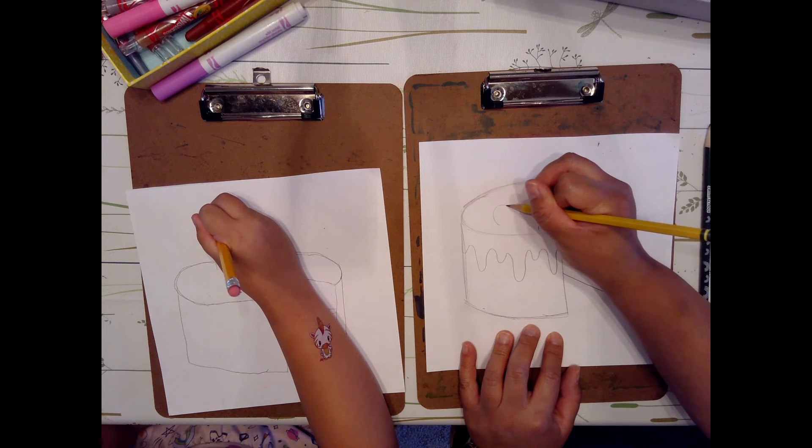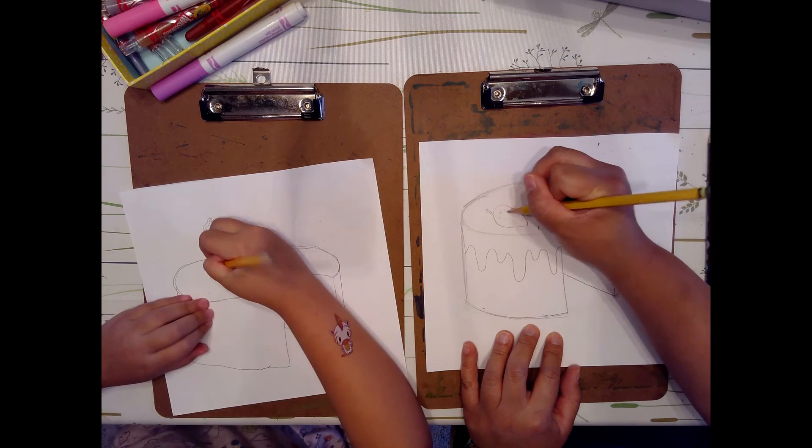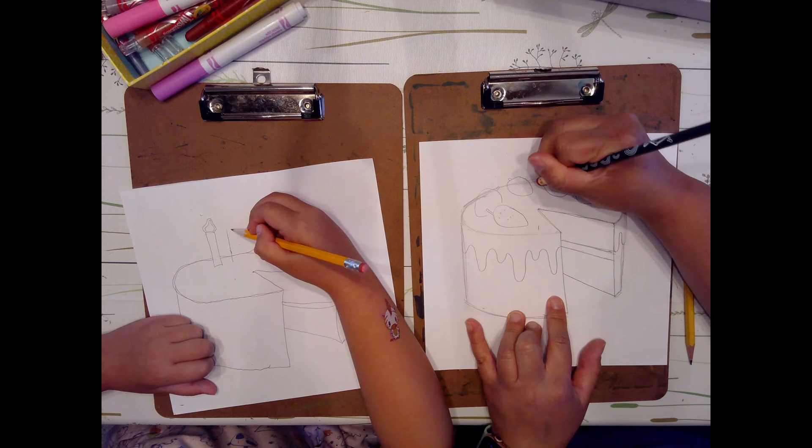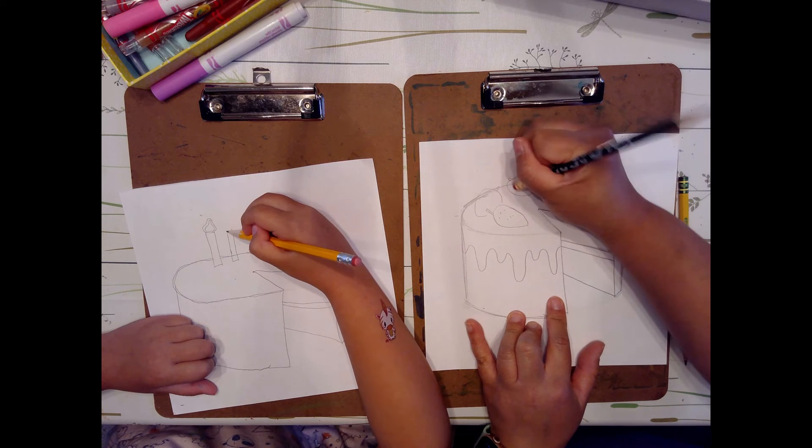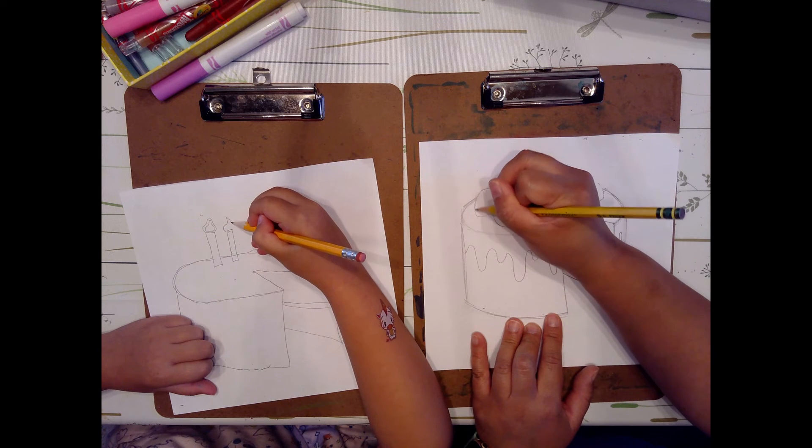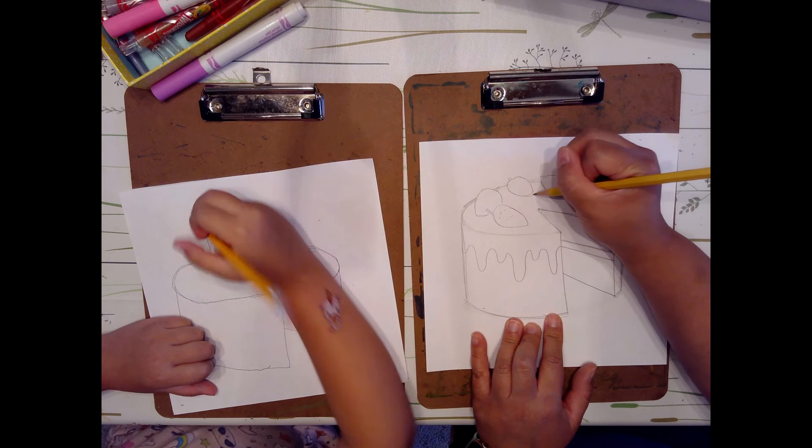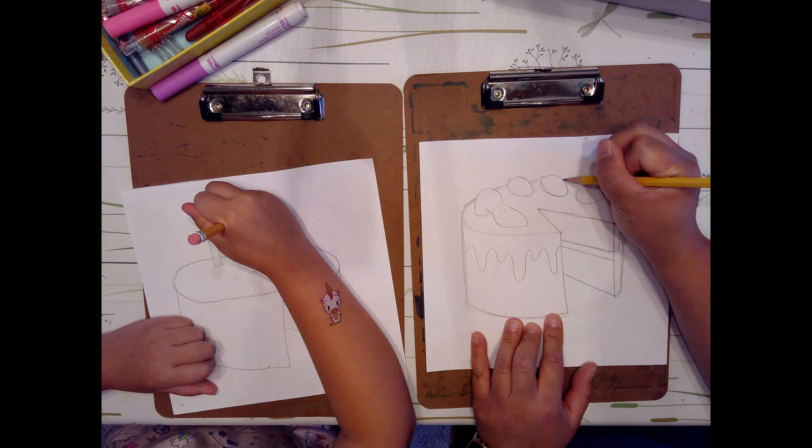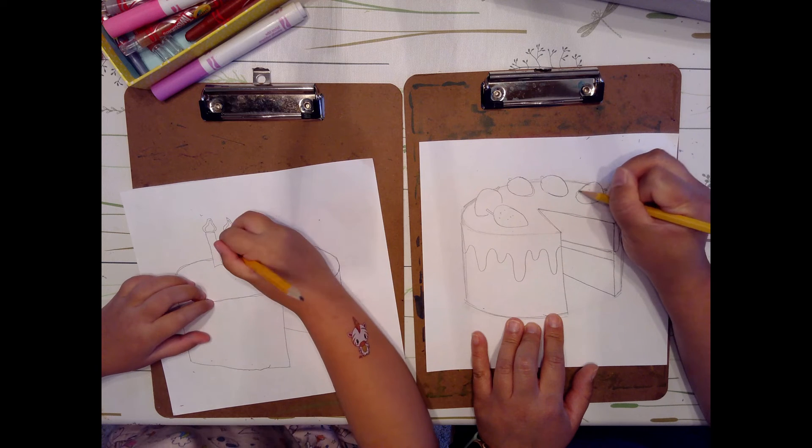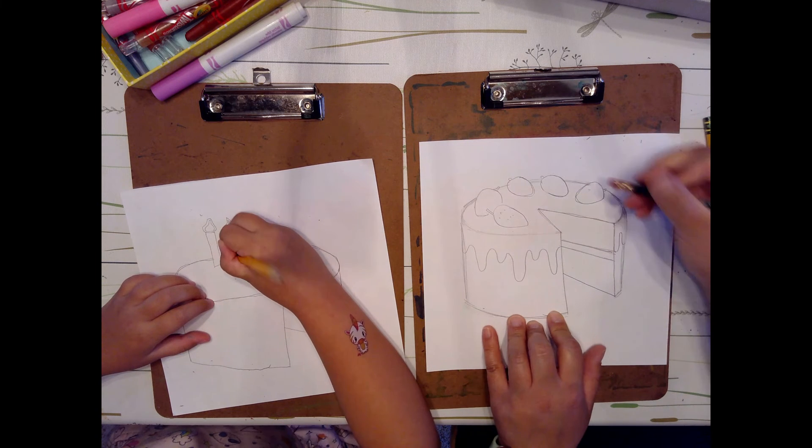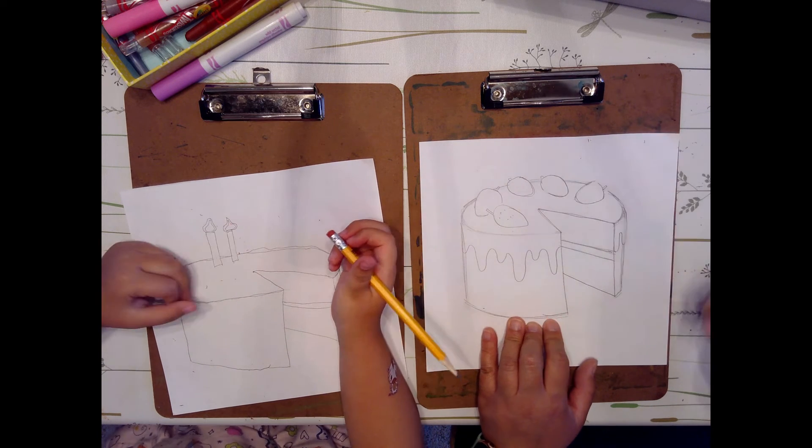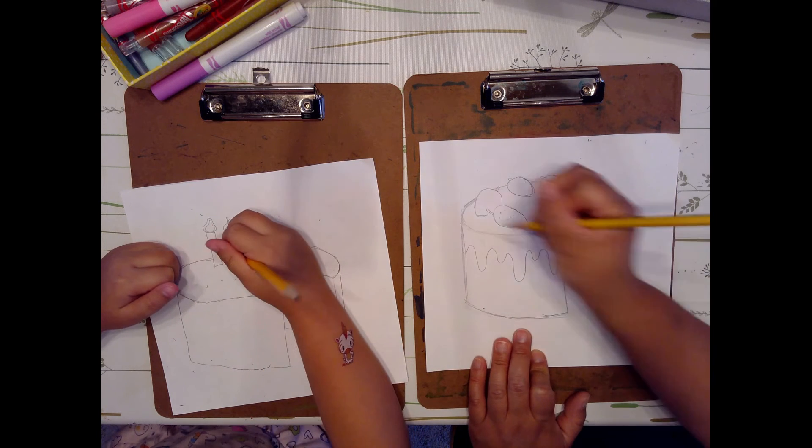Mine will have strawberries on top. I have to be mindful of any areas that need erasing because it's overlapping. I want my strawberries to look like they're on top, so I'll have to erase that cake line that goes through them. That's why it's important to draw lightly. If you draw too dark, you might notice that when you try to erase it, you can still see it. It's about controlling the strength that's in your hand.